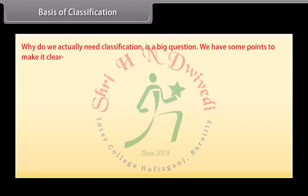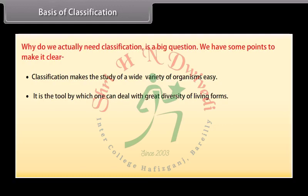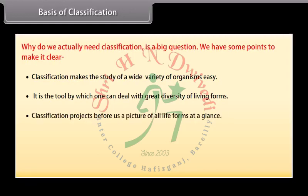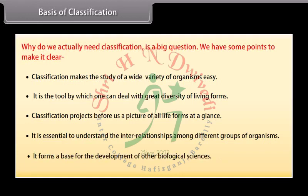Why do we actually need classification is a big question. Classification makes the study of a wide variety of organisms easy. It is the tool by which one can deal with the great diversity of living forms. Classification projects before us a picture of all life forms at a glance. It is also essential to understand the interrelationships among different groups of organisms, and forms a base for the development of other biological sciences.